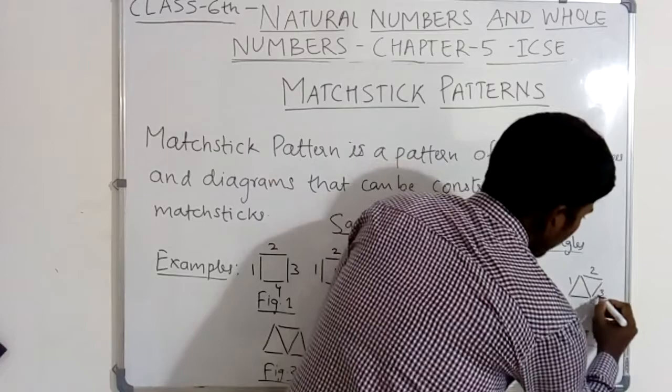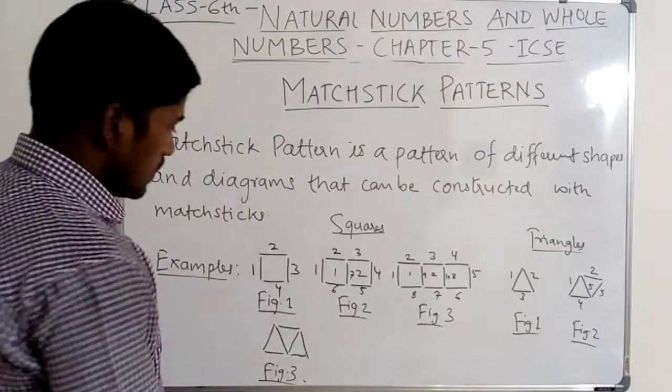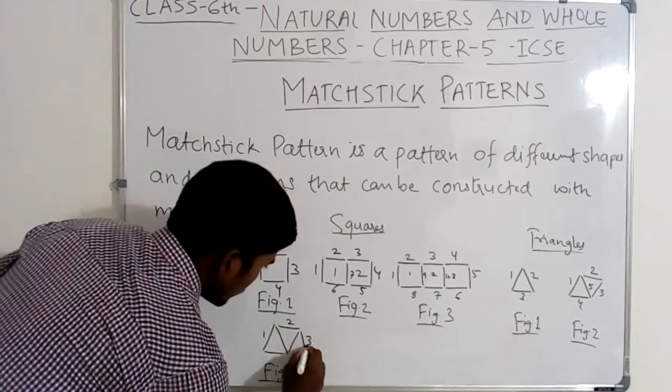Figure number 2, which is a triangle pattern, has two triangles. Now come to figure number 3. How many mastic are used here? One, two, three, four, five, six, seven. Seven numbers of mastic are used here.